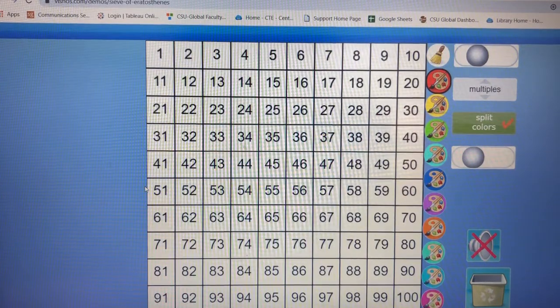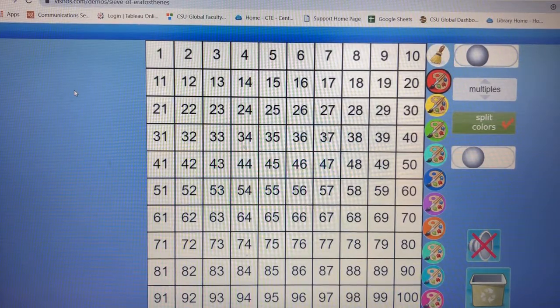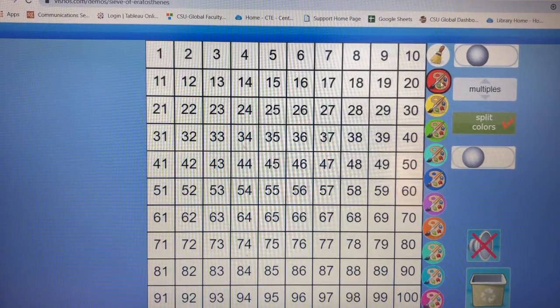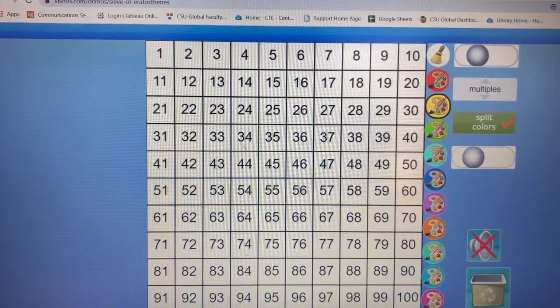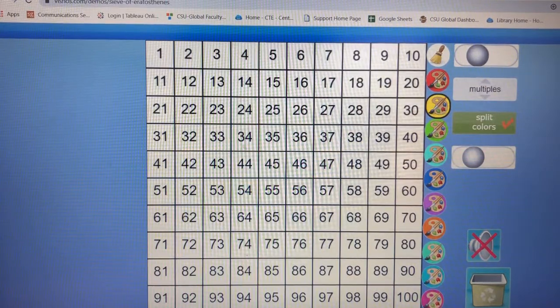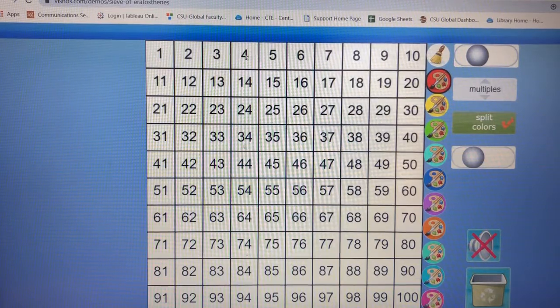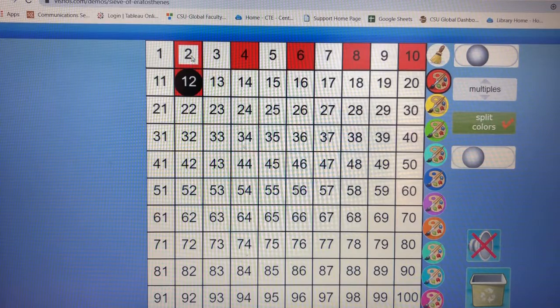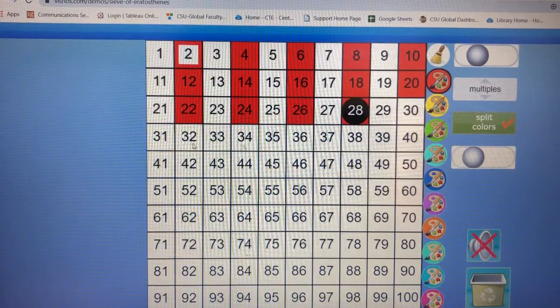Basically, this is a method for finding primes. The way it works is you click on the first prime number, which is 2. I'm going to start by clicking the color red. See how that has the black circle? If I click 2, it colors in not only 2 but every multiple of 2.